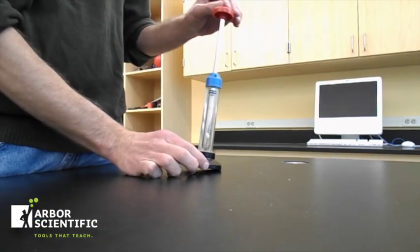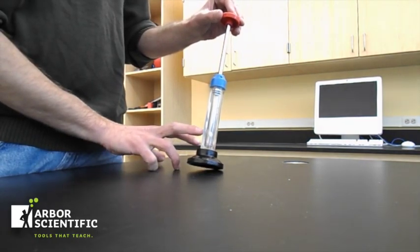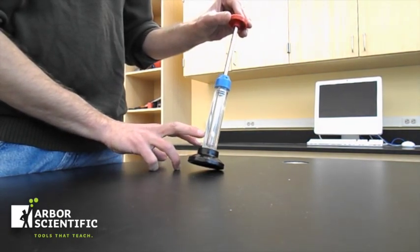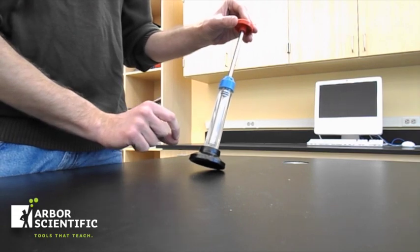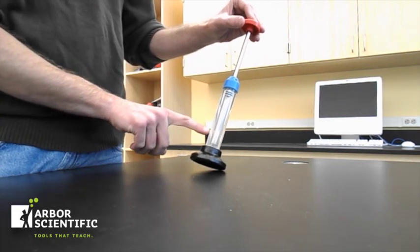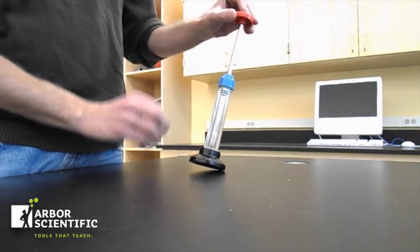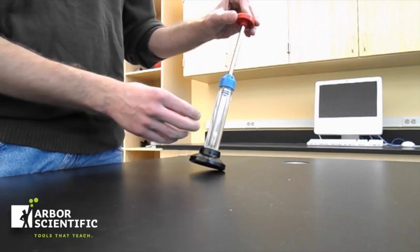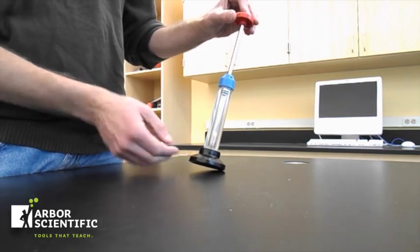So here we have the fire syringe and inside it I have a small piece of cotton ball. That helps if you use a small piece near the bottom and if you spread it out so that there's a lot of surface area on the fibers that will help it ignite.